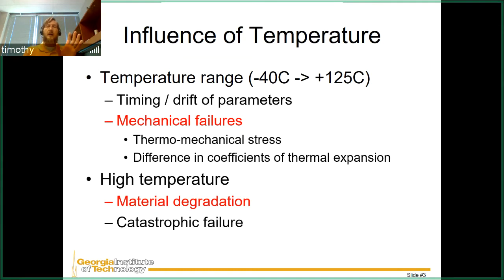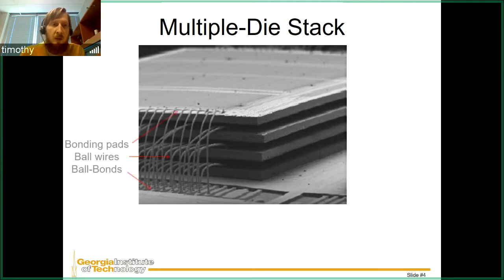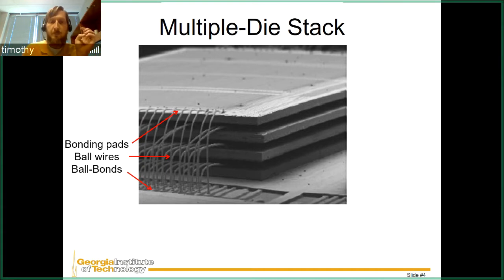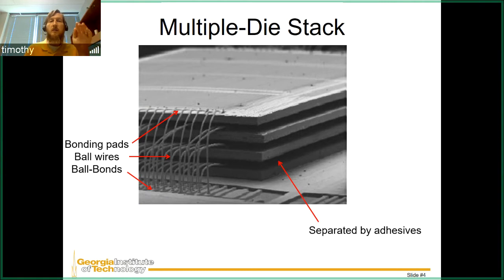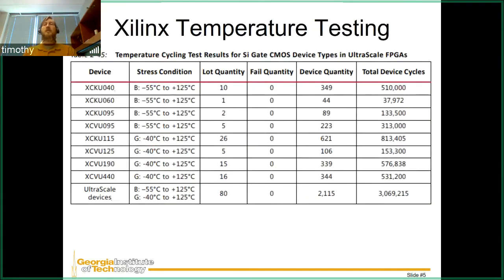Let's think about what it looks like inside a die stack. There are multiple layers, and each layer has a substrate connected together. There are bonding wires, pads, and ball wires that connect everything together in the device. They're separated by adhesives, which are usually pressure and heat sensitive — heated and compressed during manufacturing. The whole stack is encapsulated in a heat sink material to help draw off heat.